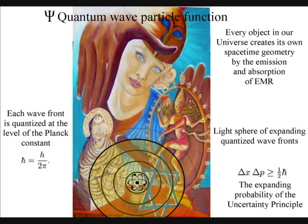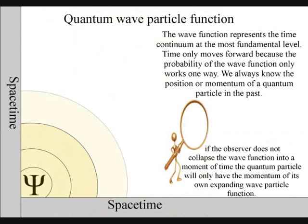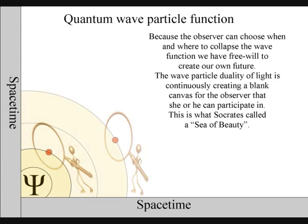This has nothing to do with consciousness. All atoms create their own space-time geometry. But it is because life, in the form of an observer, can choose when and where to collapse the wave-function that we have free will.